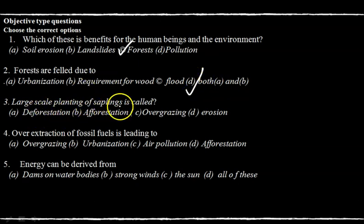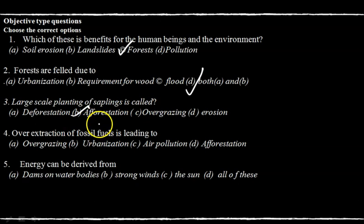Question three: large scale planting of saplings is called afforestation. The correct answer is afforestation. Just read the question carefully and write the right answer.